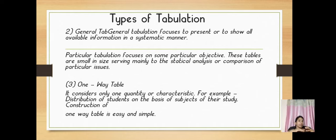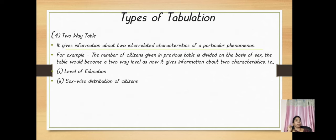Types of tabulation. General tabulation focuses to present or show all available information in a systematic manner. Particular tabulation focuses on some particular object. These tables are small in size serving mainly for statistical analysis or comparison of particular issues. One way table shows one quantity or a characteristic. For example, distribution of students on the basis of subject of their study. Construction of one way table is easy and simple.